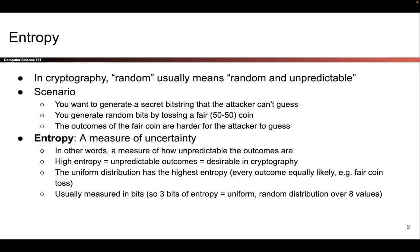The formal measure of this is something called entropy, which measures how uncertain or unpredictable the outcome is. In general, we like things that are high entropy in cryptography because high entropy means the outcome is hard to predict. The fair coin had high entropy because it was hard to predict whether each toss was heads or tails, while the biased coin had low entropy because the outcome was predictable. In this class we won't go deep into measuring entropy, but for reference, entropy is measured in bits — a fair coin has one bit of entropy, and a uniform distribution over eight values has log base two of eight, which is three bits of entropy. The important takeaway is that entropy formally measures uncertainty and high entropy events are good.